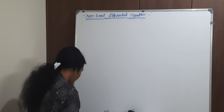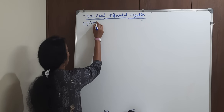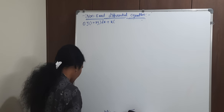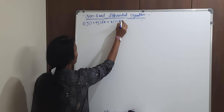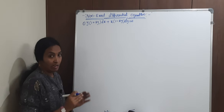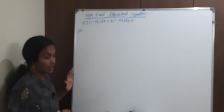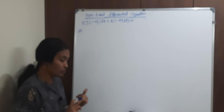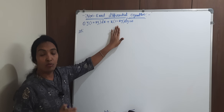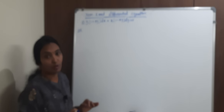Our problem is: y(1 plus xy) dx plus x(1 minus xy) dy equal to 0. First, observe the equation carefully. We need to check this equation by the inspection method. It is in the form of mdx plus ndy. First, you need to check the exactness — whether it is exact. If exact, find the solution directly. If not exact, go for the integrating factor methods.